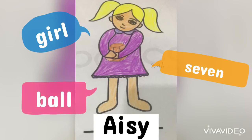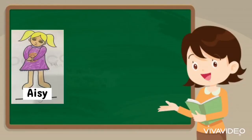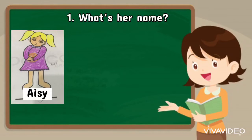After this, I am going to read the question and I want you to repeat after the answer. Number 1: What's her name? Her name is Aish. Repeat after me: Her name is Aish.